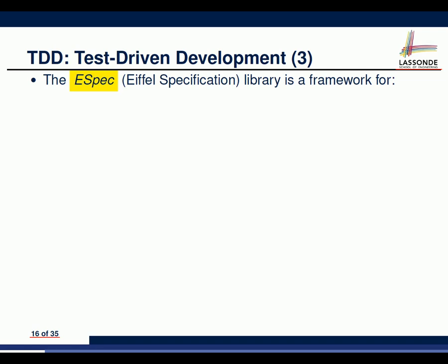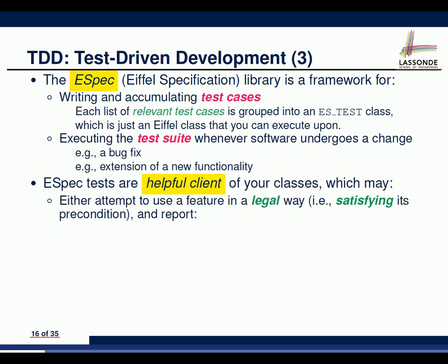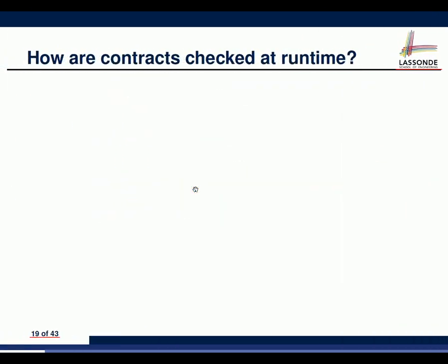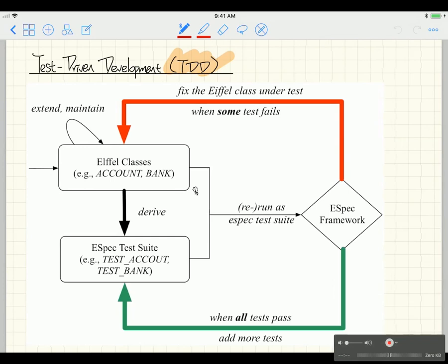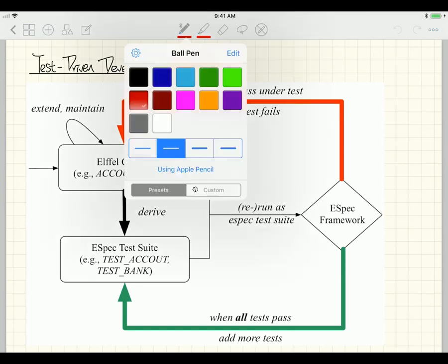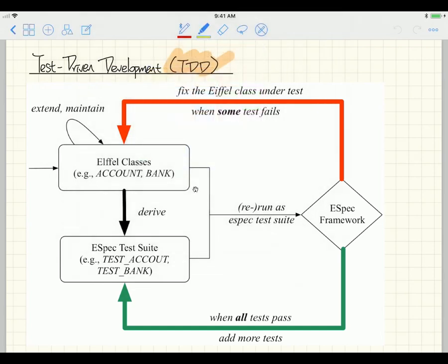Another way to think about Eiffel tests: they're simply a helpful client that demonstrates the usages of your software. Now I'd like to go over one flowchart quickly. This flowchart covers all the steps you should really follow. It starts with some classes — and we can apply this to your Java, Python, C-sharp, or any software project. As soon as you start writing your software, think about the earliest point you can write a test case. Derive your test cases, write them using whatever unit testing framework your language supports, and then start running them.